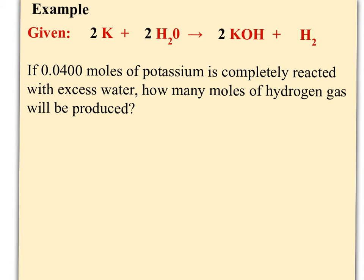So let's look at an example here. If you're given the balanced equation, two potassium atoms plus two water molecules produce two formula units of potassium hydroxide plus one molecule of hydrogen gas. Then, if you started with 0.040 moles of potassium and you completely reacted it with excess water, so there's lots of water, how many moles of hydrogen gas will be produced?